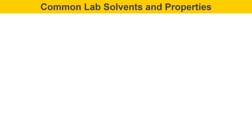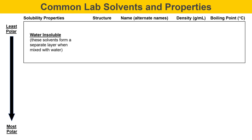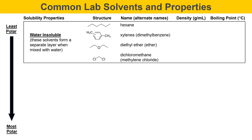On this slide I'm going to take you through some common lab solvents and their properties. I'll start with water-insoluble solvents — solvents that form a separate layer when mixed with water — starting from the least polar at the top. Hexane, xylenes, diethyl ether, and dichloromethane all have low solubility in water. Their densities and boiling points are listed here, and densities are particularly important when doing extractions because density controls which layer is on top or bottom in a two-phase liquid extraction.